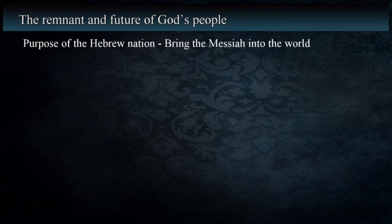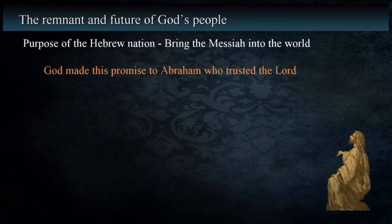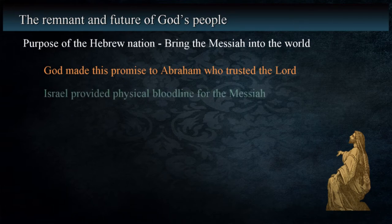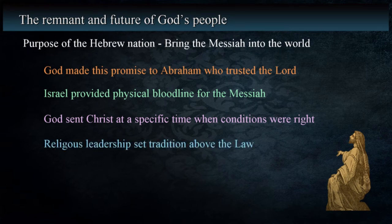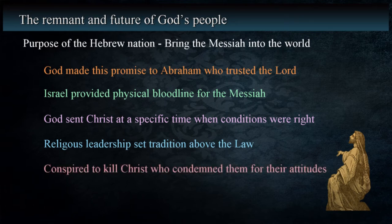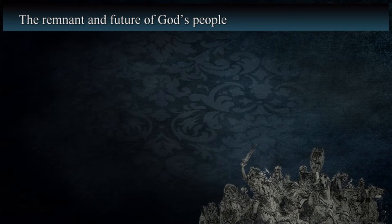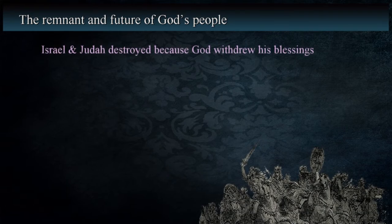The Hebrew nation was created to fulfill a specific function: bring Christ into the world. The promise was made by God to Abraham, who trusted the Lord and who serves as a role model of true faith. God used this nation to create a physical bloodline that the Messiah would be born into. As time moves on and the kingdom develops, God states that the Messiah will be of the seed of David. God then waited until the time was right to send Christ into the world — a time in which the religious leadership taught their own traditions and placed more emphasis on them than they did the law. When Christ began to teach, they knew he condemned them for their attitudes, for which they conspired to have him killed. This was God's plan.